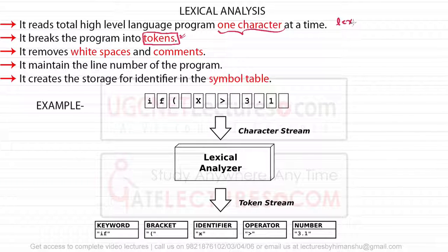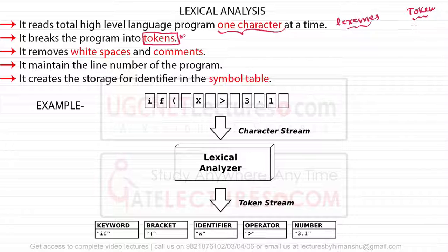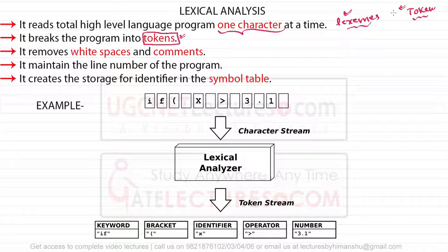There are two terms: number one is a lexeme and number two is a token. The definition between these two terms is very ambiguous and students often get confused between them. After this video, search for the difference between lexeme and token on Google — the next few videos will explain the difference. The lexical analyzer also removes white spaces and comments.